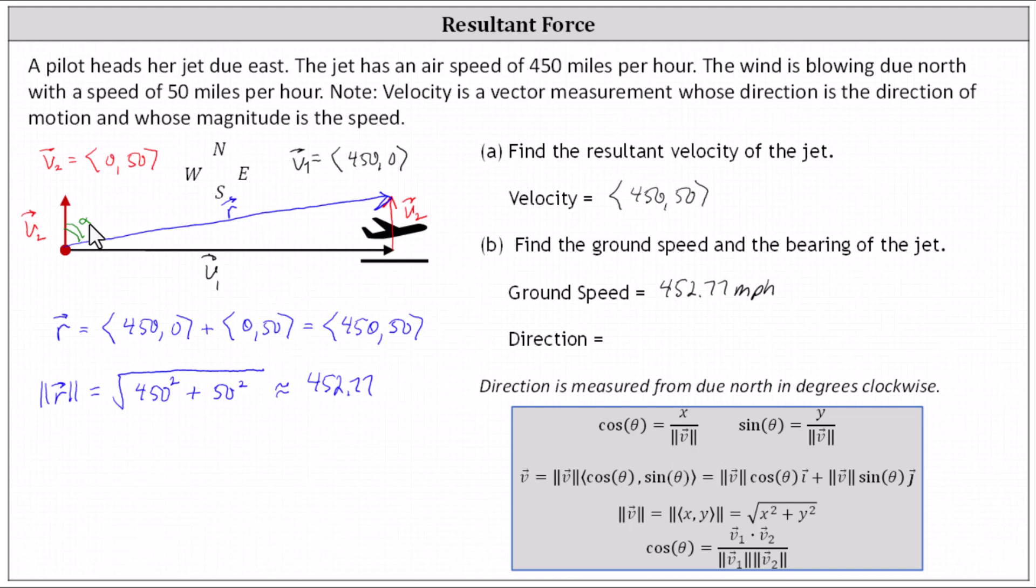There's several ways we can go about doing this. We could use the formula shown here at the bottom to determine the angle between two vectors using the resultant vector r and vector v sub two. But because we have a right triangle here, it'll be a lot easier if we determine the small acute angle here and then subtract that from 90 degrees to determine the direction.